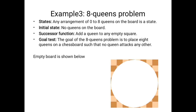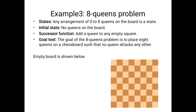We start with an empty eight-by-eight chess board. Initially, no queens are placed. You place the first queen at any position of your choice, then from the second queen onward you must observe the constraint conditions. Our aim is to place all eight queens such that no queen attacks any other queen.